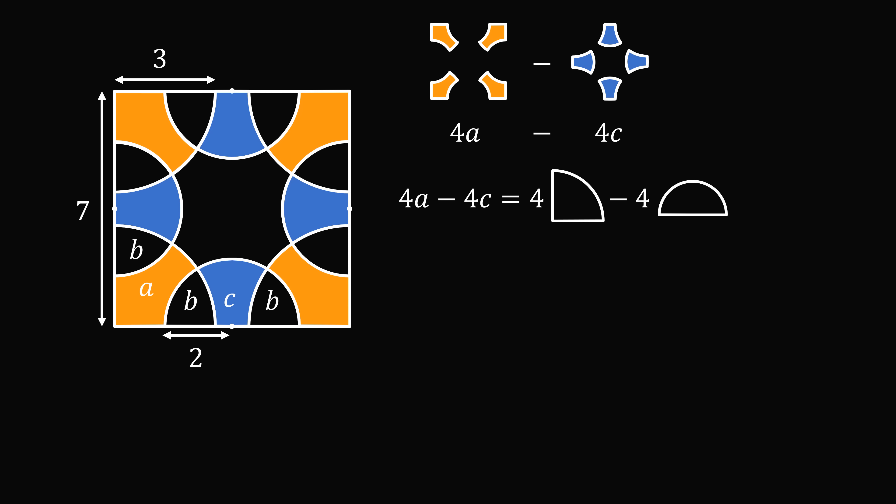We know the radius of each quarter circle is 3. So, the area of each quarter circle is pi times 3 squared all over 4. We know the radius of each semicircle is 2. So, the area of each semicircle is pi times 2 squared over 2. Just going through the arithmetic, we get that 4a minus 4c is equal to pi. And that's the answer!